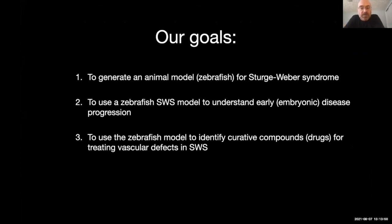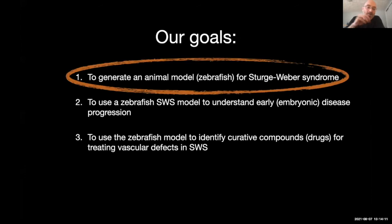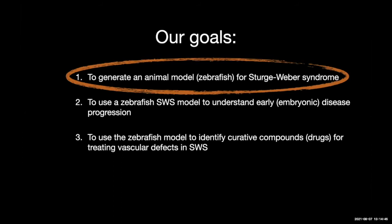Our specific goals are to generate an animal model for Sturge-Weber. We're still in early days — I was inspired to start working on Sturge-Weber by Joyce Bischoff and now collaborate with her. As I'm talking right now we're starting to screen our first fish for ones that carry the GNAQ mutation that's known to be associated with Sturge-Weber. Hopefully next July we'll be in a great position to give updates. Instead, today I'll tell you about a proof of principle — making models, studying what's wrong with the cells, and correcting with candidate drugs.